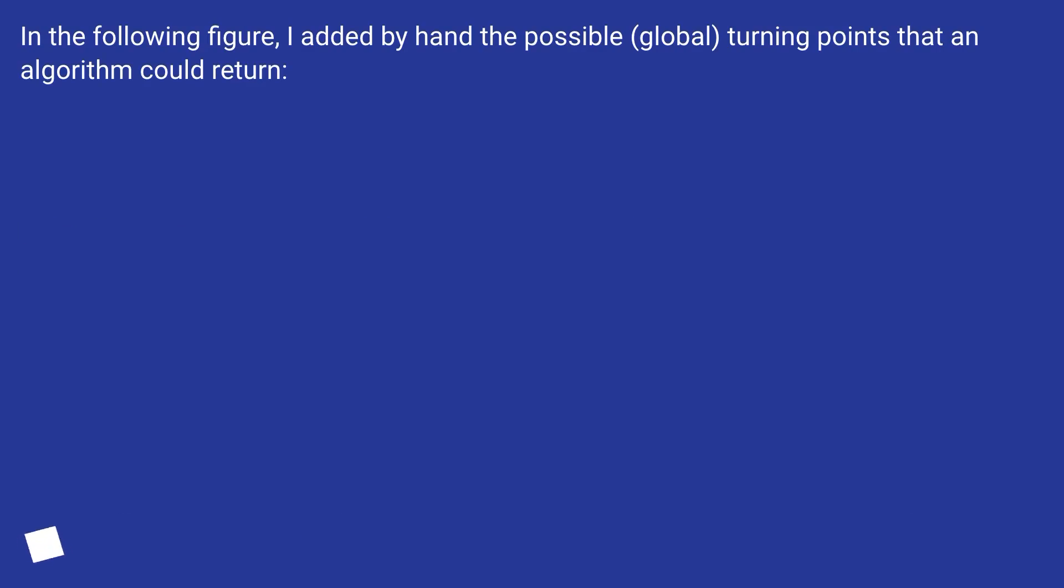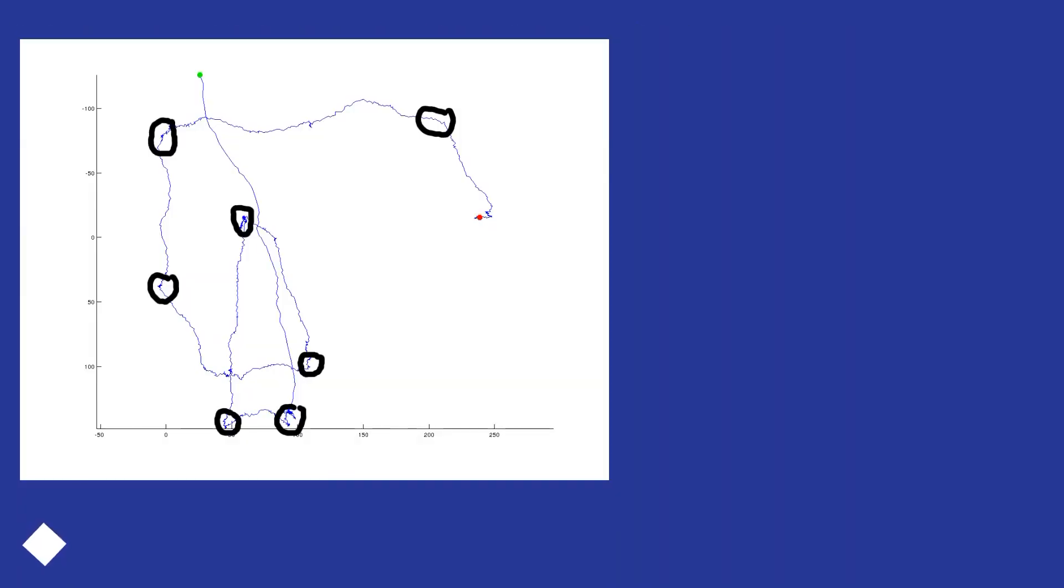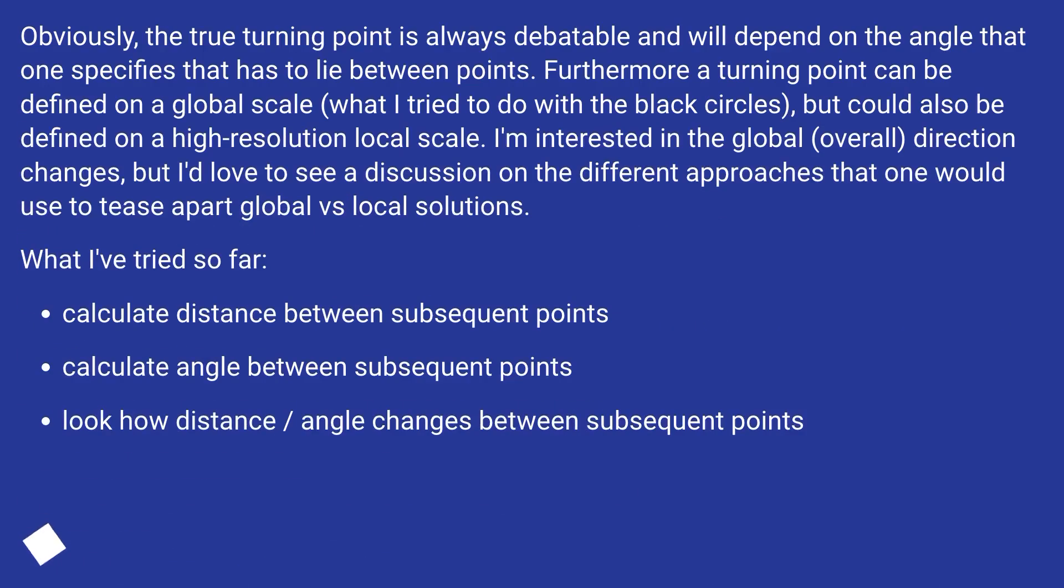In the following figure, I added by hand the possible global turning points that an algorithm could return. Obviously, the true turning point is always debatable and will depend on the angle that one specifies that has to lie between points.